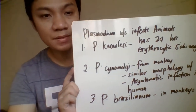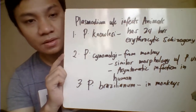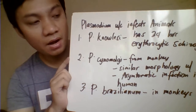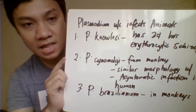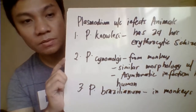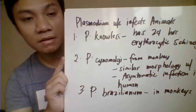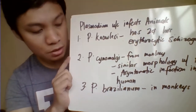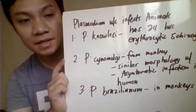Plasmodium species that infect animals include: Plasmodium knowlesi, which has a 24-hour erythrocytic schizogony life cycle; Plasmodium cynomolgi, which resembles the morphology of vivax but primarily infects monkeys and causes asymptomatic infection in humans; and Plasmodium brasilianum, which is a parasite of monkeys.